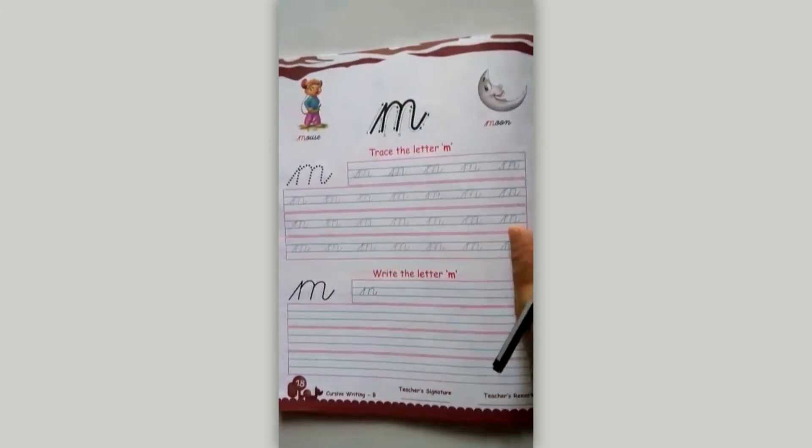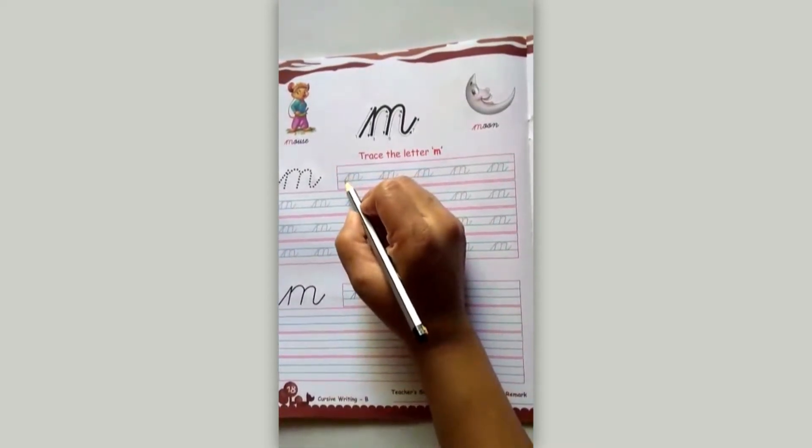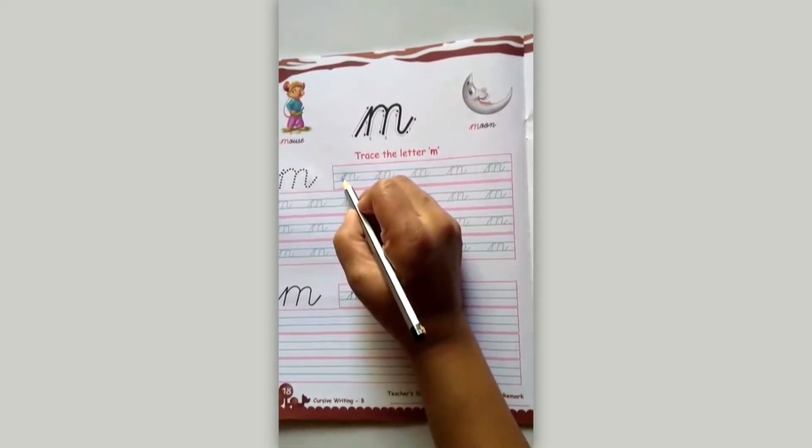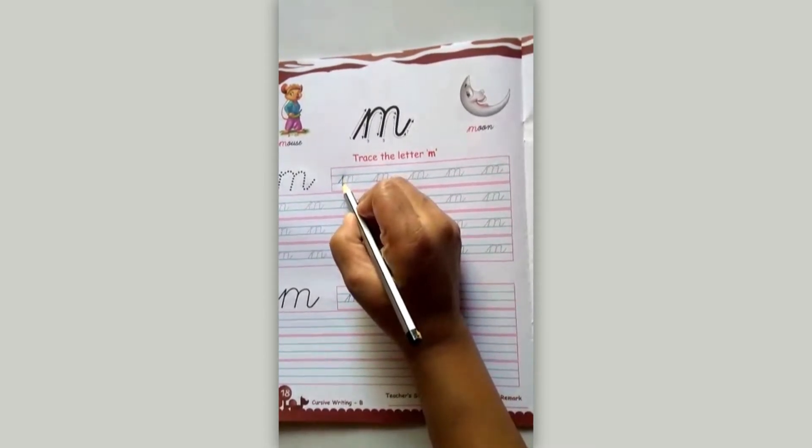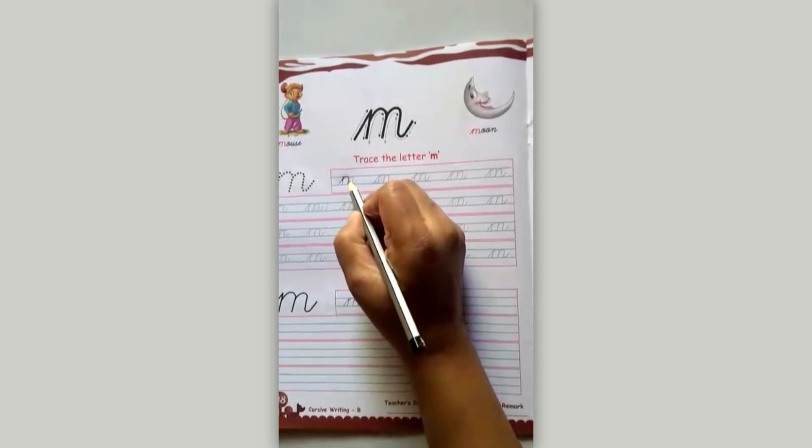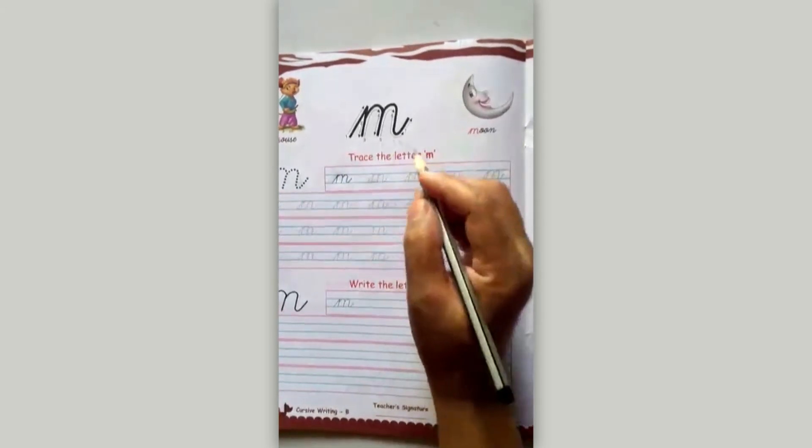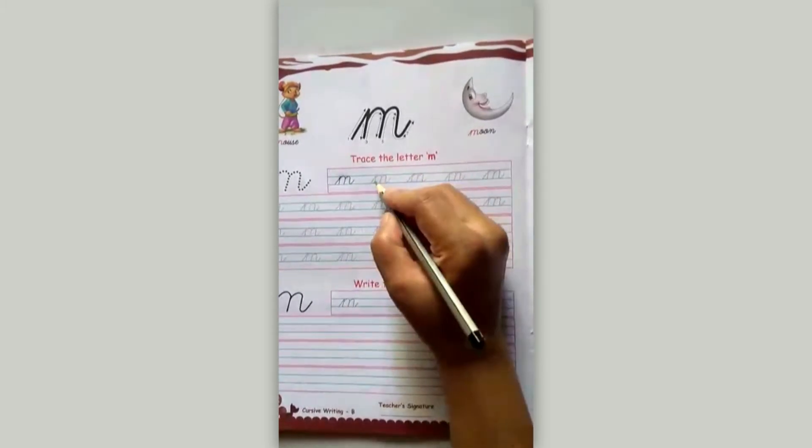So first we'll make it on the given down. Start from the third line. 1, 2, 3. A small slanting line go up. Come down. Go up again. And a curve. Come down. And like this. Come down again.